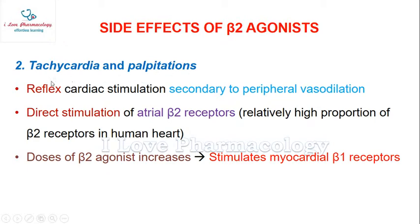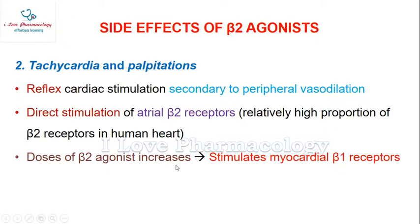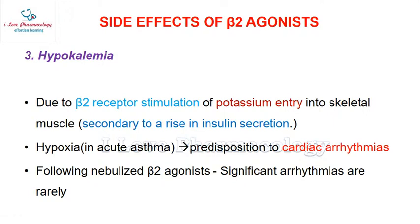Tachycardia and palpitation are caused mainly by reflex cardiac stimulation secondary to peripheral vasodilation via beta-2 receptors on blood vessels. A second reason is direct stimulation of atrial beta-2 receptors, since the human heart has a relatively high proportion of beta-2 receptors. Additionally, as the dose of beta-2 agonist increases, it can stimulate myocardial beta-1 receptors, thereby causing tachycardia and palpitation.